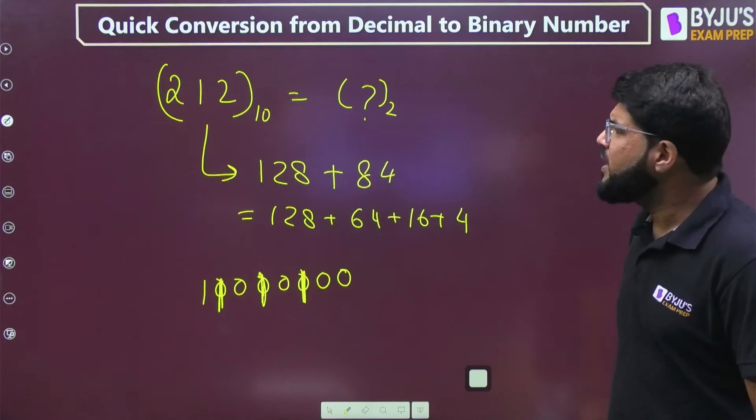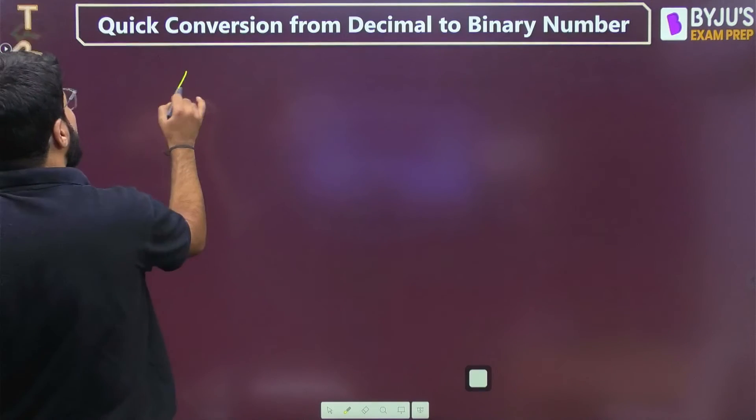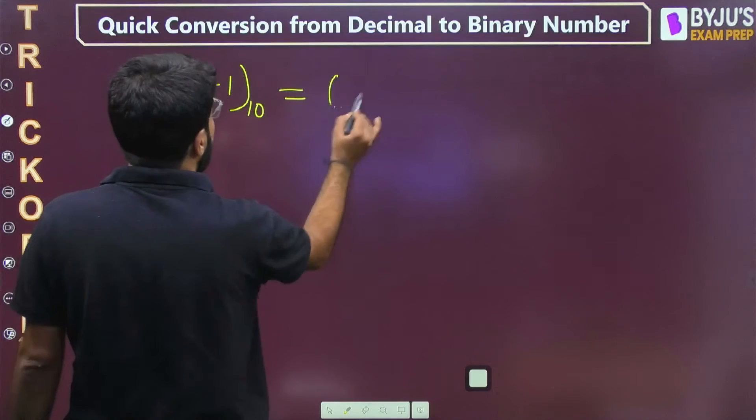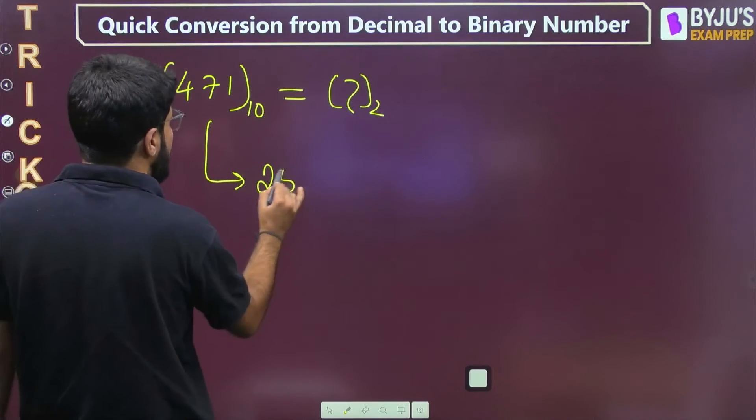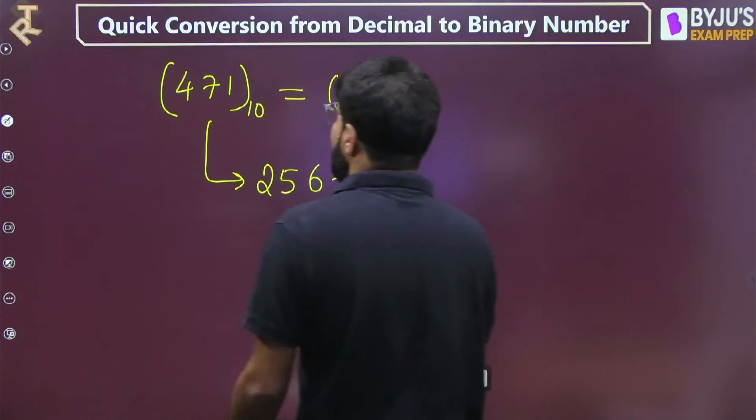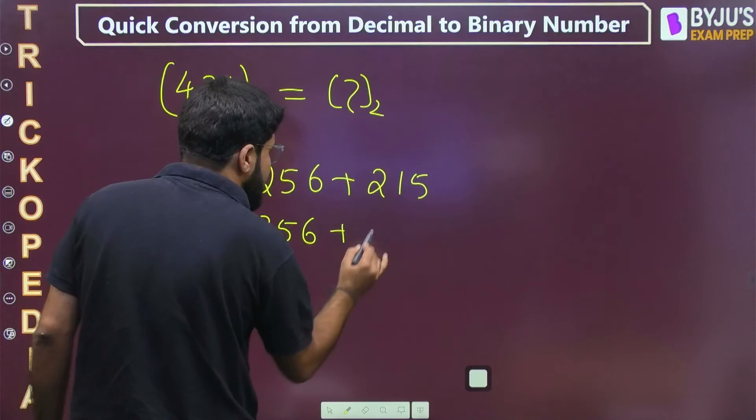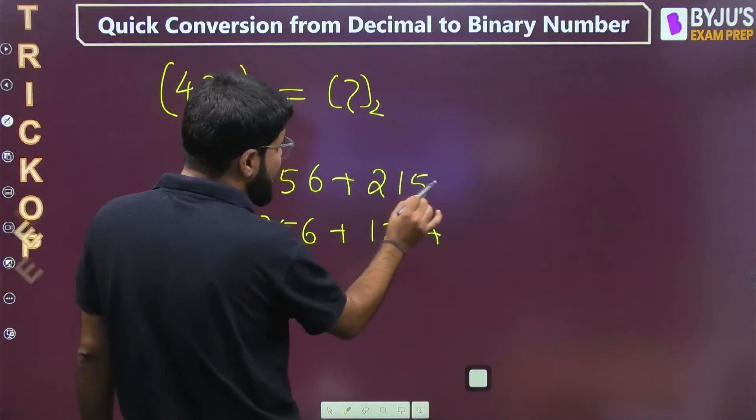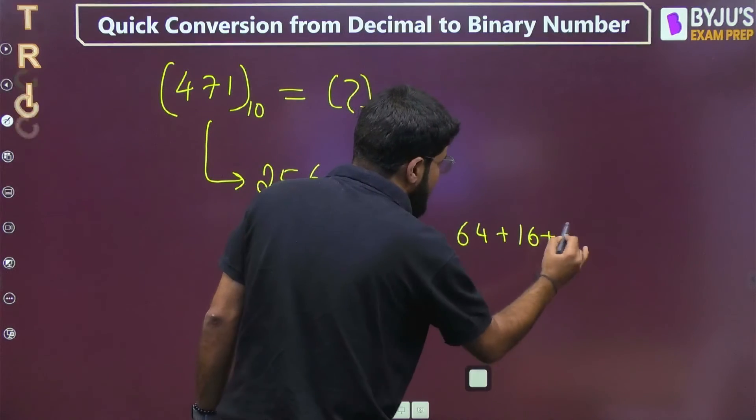Let's make the number even bigger. Suppose it is 471, and I want the binary conversion. 471 is 256 plus 215. Break it up quickly: 256 plus 128 plus 87, which is 64 plus 16 plus 7.